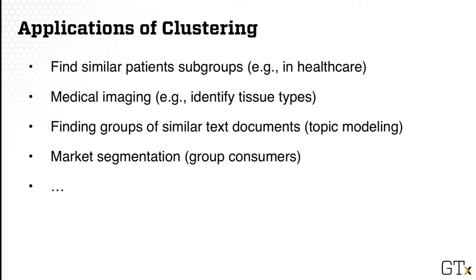We can find a lot of applications of clustering. For example, in healthcare, we want to group patients together so we can apply similar treatments to them, or in medical imaging, we may want to identify similar types of tissues. For text documents, we may want to do topic modeling to figure out the topics of documents and common words in each cluster. Or in market segmenting, we may want to group consumers together so we know how to apply similar marketing strategies on them.